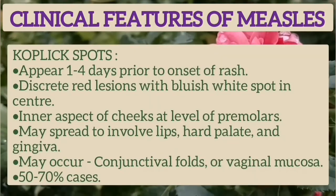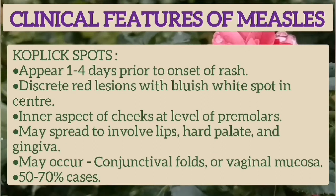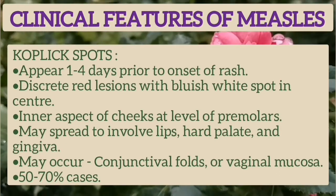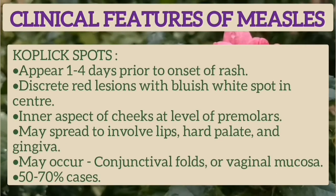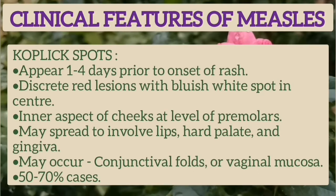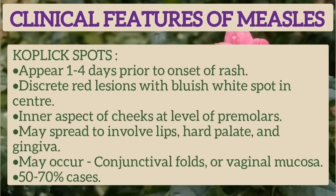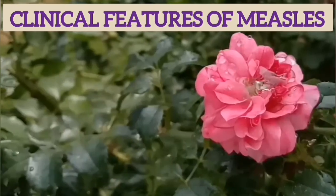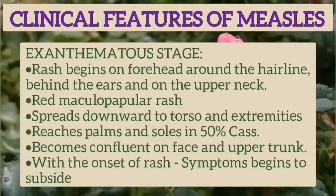Koplik spots appear 1 to 4 days prior to the onset of rash. These are discrete red lesions with bluish-white spots in the center. They are found on the inner aspect of the cheeks at the level of the premolar. They may spread to involve the lips, hard palate, and gingiva, and may also occur on the conjunctival folds or vaginal mucosa. They are present in 50 to 70% of cases.